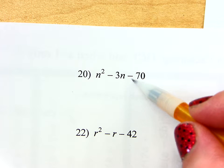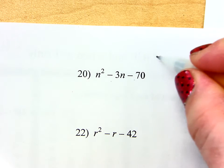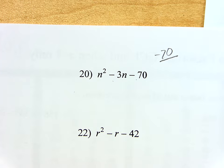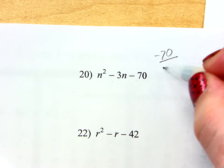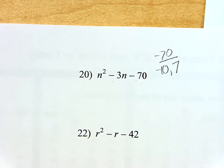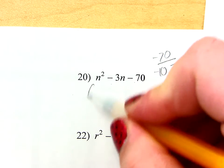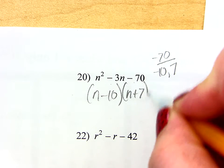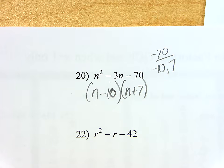So, now let's look at one like number 20. Negative 70. But now I want it to add to be a negative 3. It's the same idea. So, give me some numbers that multiply to get you 70. Yeah, 10 and 7, right? So, let's see. Negative 10 and a positive 7. Well, doesn't that add to be a negative 3? So, there's my pair right there. So, N minus 10 and N plus 7. So far, so good?